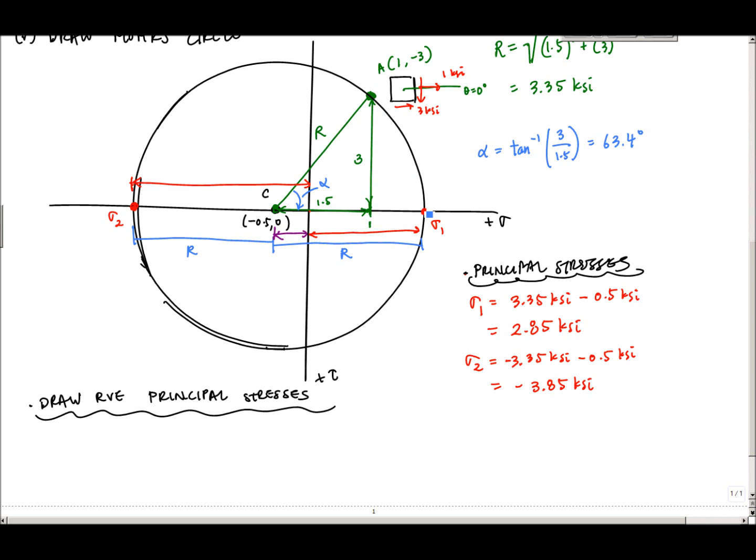In order to get to sigma 1, to go from A to sigma 1, I have to rotate clockwise. A rotation of whatever angle in Mohr's circle is half in the representative volume element, or what I call real life. On the representative volume element, I go half what I go in Mohr's circle, so theta P1, the principal stress 1, the angle to there is alpha divided by 2, which is 31.7 degrees clockwise.